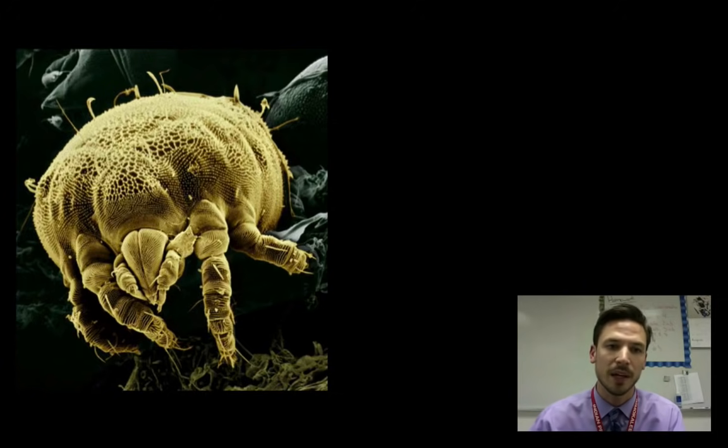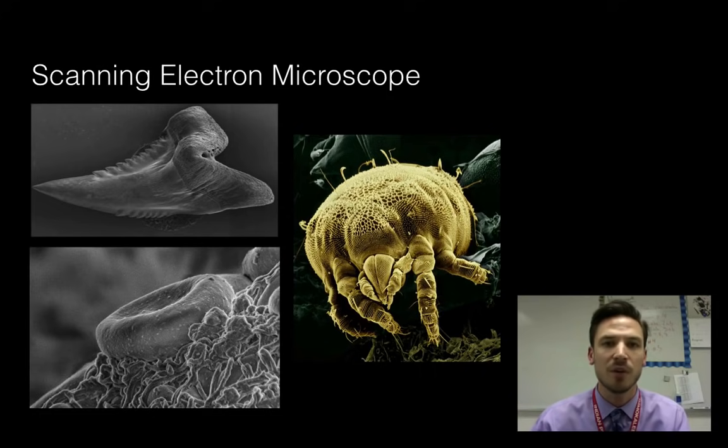So with these scanning electron microscopes, we're going to be getting magnification up to about 500,000 times total. I remember that before we only got up to about a thousand with that compound light. So now we're getting up to about a half a million magnification. These images in scanning electrons are going to be three dimensional. So just like the dissecting, we're going to see a lot of detail, but we're going to be zoomed in a lot more.